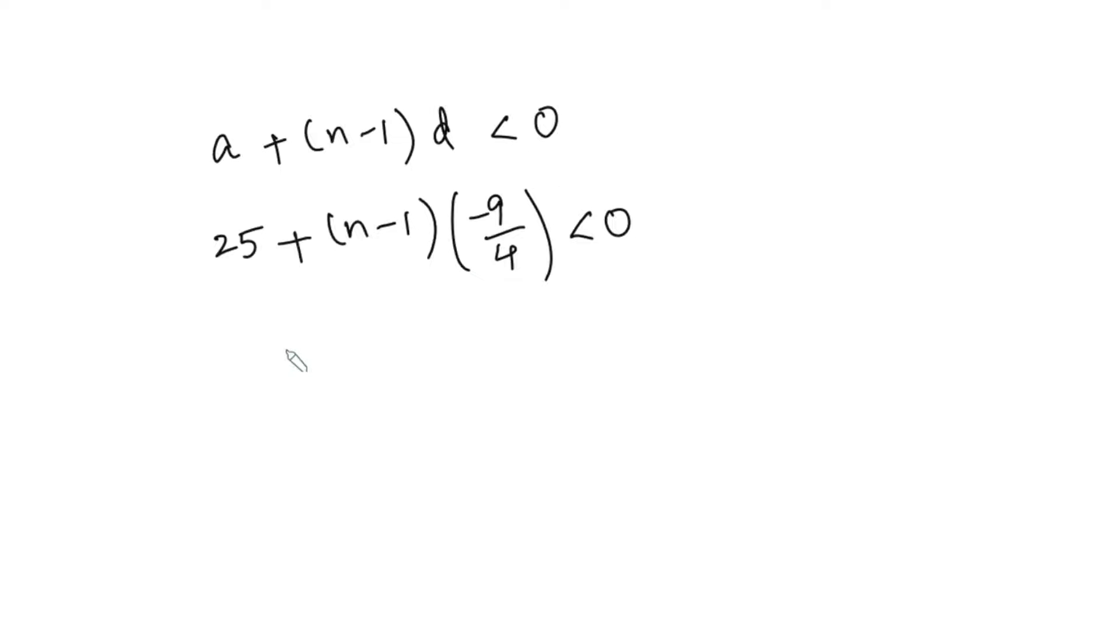And if we simplify this further, we get 25 minus 9/4n. And negative 1 times negative 9/4 is plus 9/4, that is less than 0.